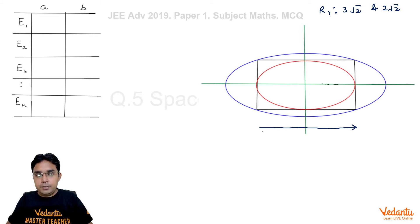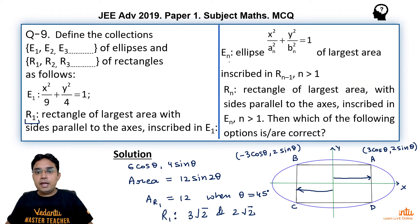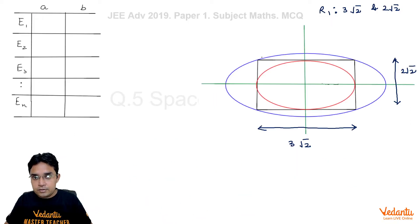Now we want one more ellipse to be inscribed in this rectangle so that its area is maximum. As you can see En, if I take n as 2, we can read this as E2 and it will be ellipse of largest area inscribed in R1. So R1 we have found, this is black color one. So my E2 would be an ellipse that is inscribed in this rectangle and has maximum possible area.